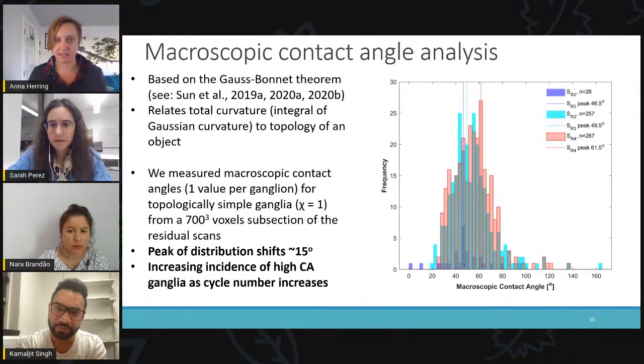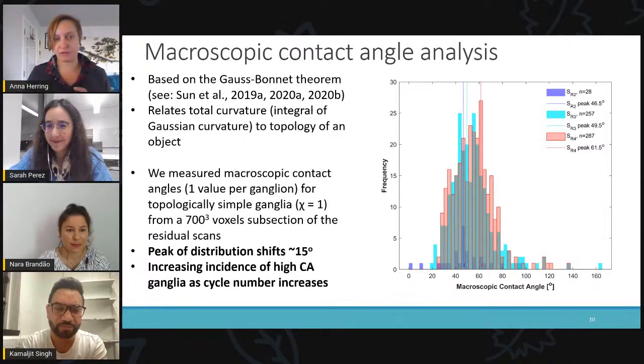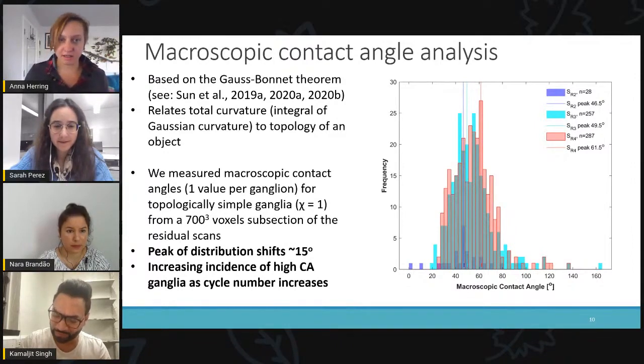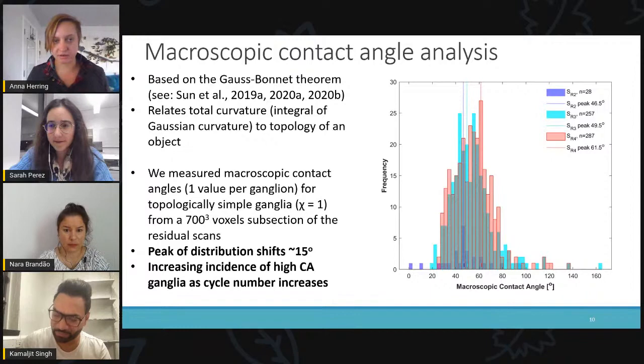And this, I think, is the most convincing piece of evidence that is indicating a shift in wettability state in these experiments. And that's the macroscopic contact angle measurement of the CO2 ganglia. So this is a method that was developed by Chen Hao Sun. And he actually gave a talk on this topic in one of the first tea time talks. But essentially, this analysis gives us one contact angle value for every capillary trapped ganglion. And when we look at the distributions of these ganglia after each drainage and imbibition cycle, we see that the peak of the distribution has shifted towards more water wet contact angles. So we go from 46.5 degrees in the second cycle to a peak of 61.5 degrees after the fourth cycle.